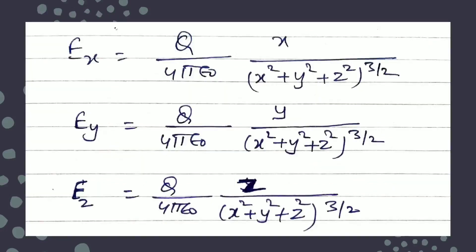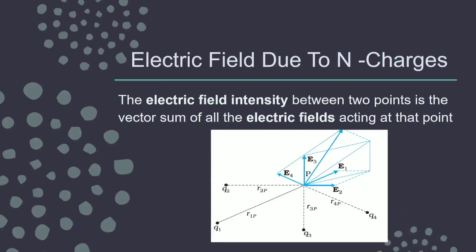Eₓ is along the x-axis, so: Eₓ = Q/(4πε₀) × x / (x² + y² + z²)^(3/2). Similarly, Eᵧ is obtained by replacing x with y, and E_z by replacing x with z. Once you have done this for the electric field due to a point charge, you can write it in component form.